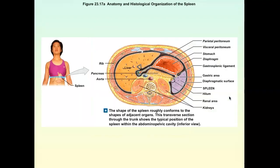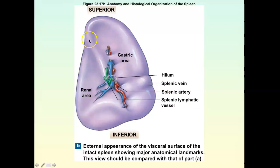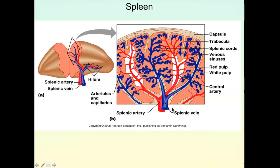Let's look at the spleen. The spleen is posterior to your stomach and located on the left side of your body, the left abdominal quadrant. The spleen is the largest mass of lymphatic tissue in the body — the largest lymphatic organ — in the left superior abdomen, posterior to the stomach.